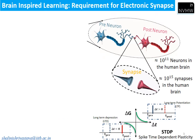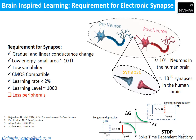Requirements for an electronic synapse: the conductance change should be gradual and linear, it should have low energy of approximately 10 femtojoules, low variability, be CMOS compatible, have a learning rate of approximately 2%, more than 1000 levels, and should also have peripheral circuits.